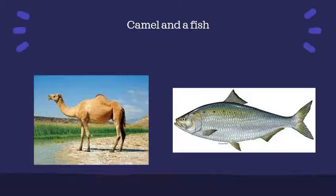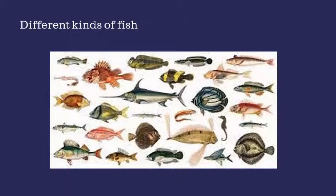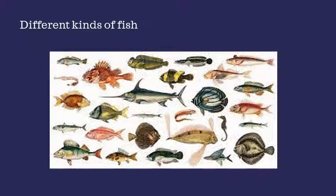Do you see that there is something common about the shape of different kinds of fish? All the ones shown have a streamlined shape, as discussed in Chapter 8. This shape helps them to move inside the water. Fish also have flat fins and tails that help them to change direction and keep their body balanced in water.